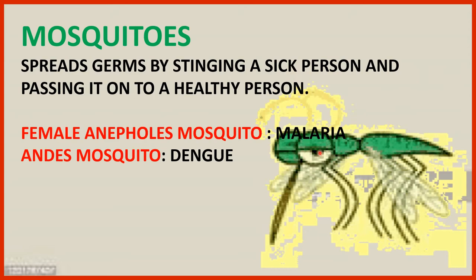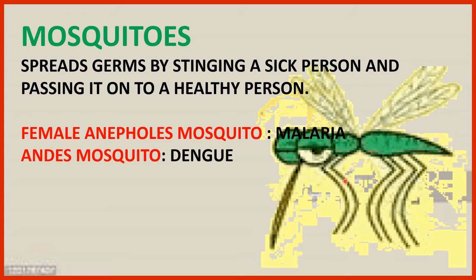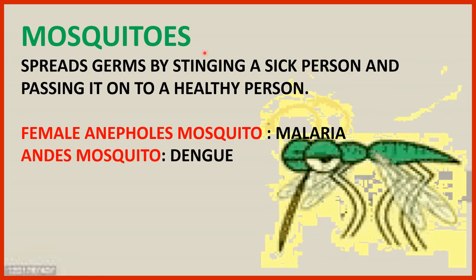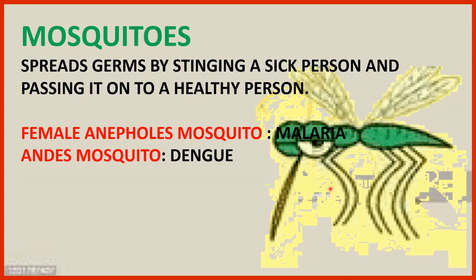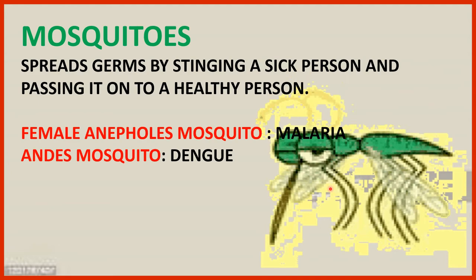Here is a mosquito. It stings us and sucks blood from a human being. These mosquitoes, when they suck blood, carry germs from one person to another. Suppose a mosquito bites a sick person and then bites a healthy person — the virus gets transmitted from the sick person to the healthy person. This is how germs are spread by mosquitoes.